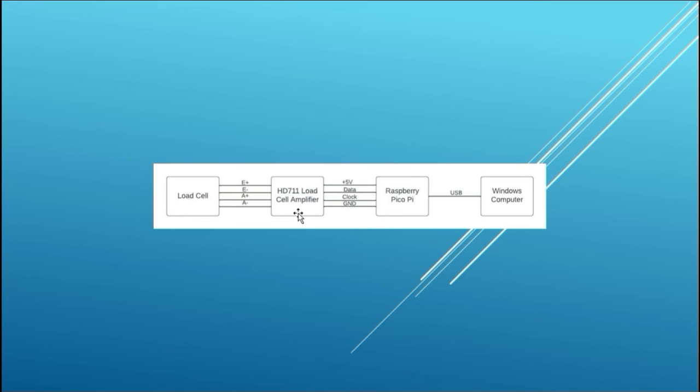This is the block diagram of the weight scale interface. Simply, the load cell is connected to the HX711 amplifier, and the amplifier is also connected to the Raspberry Pi Pico, which is USB connected to the Windows computer running Thonny. Power from the USB powers the Pico Pi, the HX711, and excites the bridge circuit in the load cell.